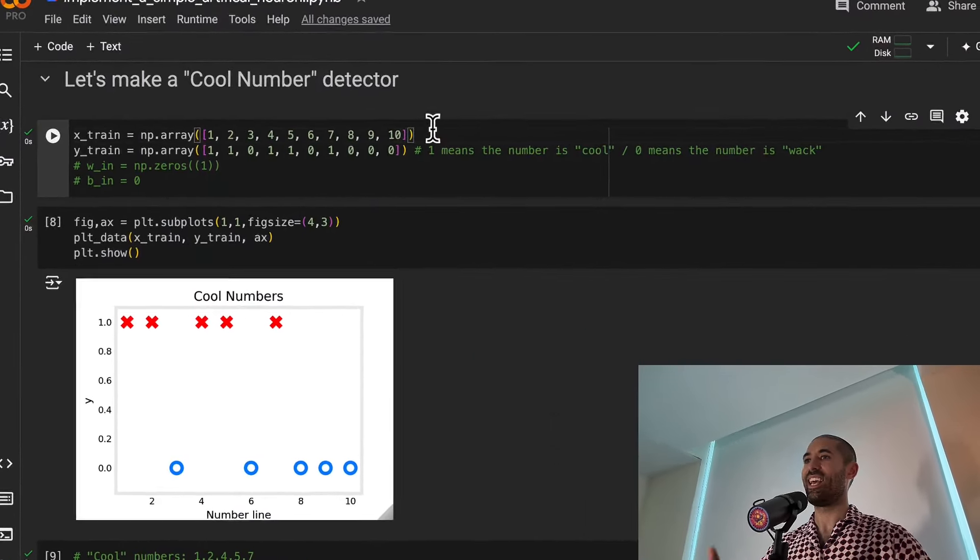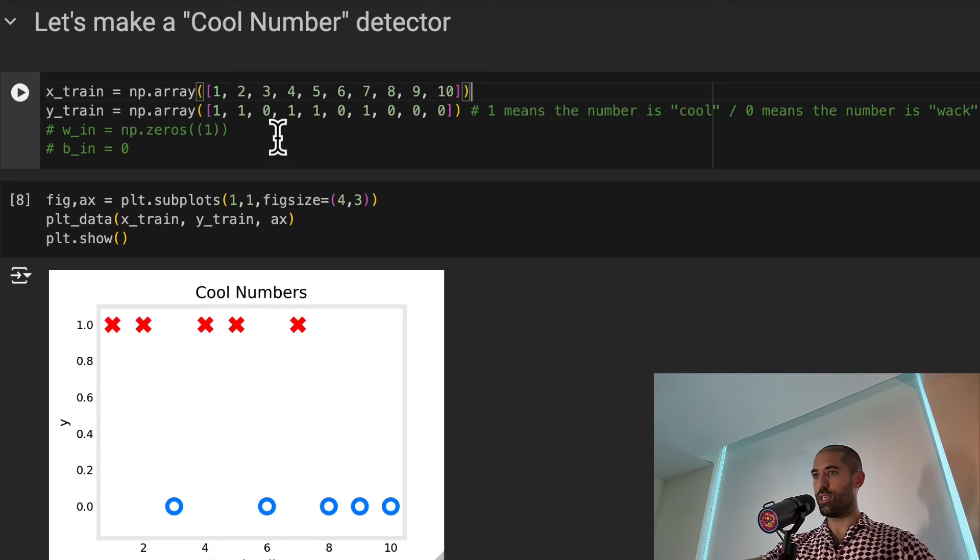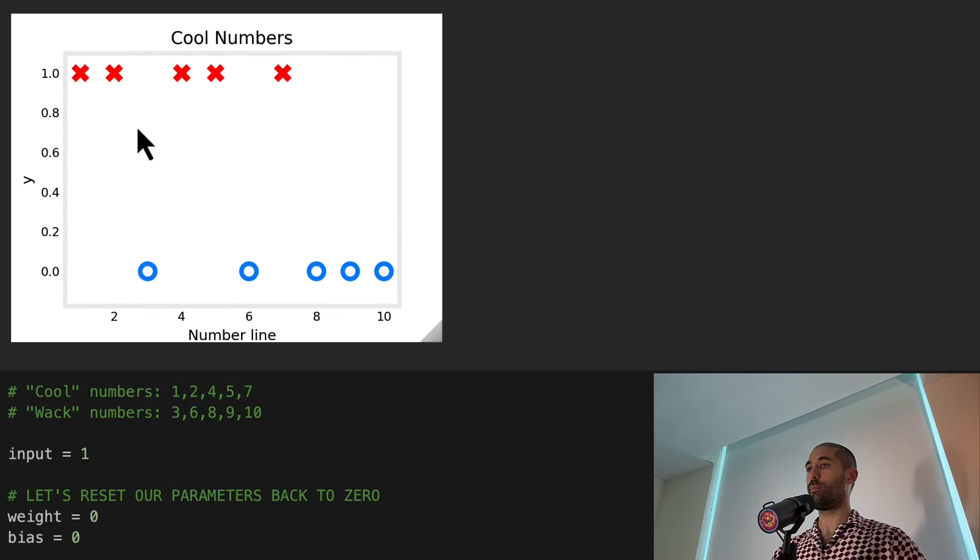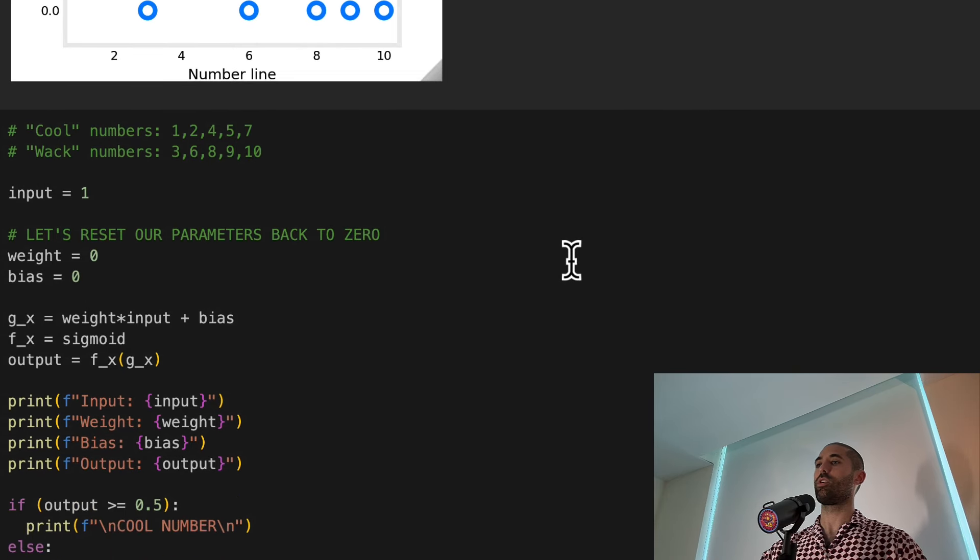Okay, so what can we even do with a neuron? It turns out a lot. For example, let's now train a neuron. This training example will be ridiculous, but I assure you, it's going to give you a great understanding of how we use a neuron. Here is a list of numbers from 1 to 10. And below this list of numbers, I'm specifying whether or not I think each number is cool or whack. A 1 means cool, 0 means whack. The numbers I think are cool are 1, 2, 4, 5, and 7. Why do I think they're cool? I don't know. I just think they are. Machine learning, which is what we're doing, is really good at picking up on patterns that are very random or arbitrary. Patterns that are difficult to pin down in simple rules. Here is a plot of these numbers. An X marks a cool number and an O marks a whack number.